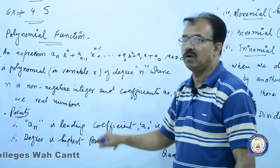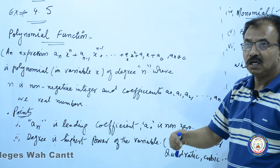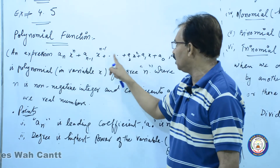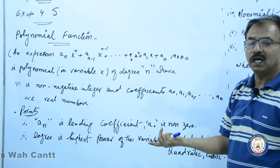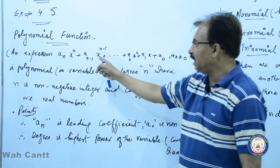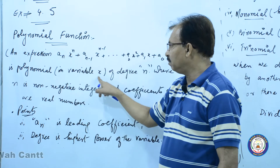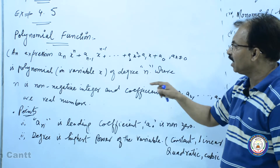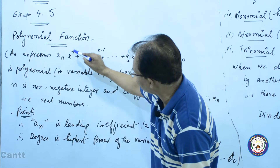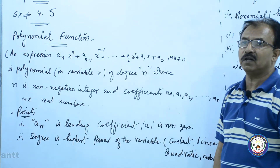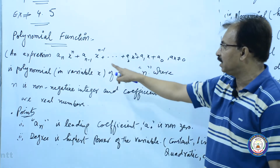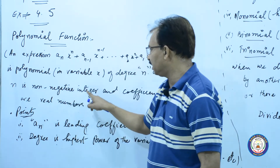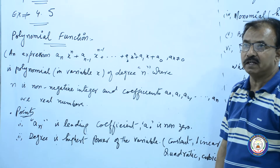اس polynomial میں variable x ہے۔ یہی polynomial y کے لحاظ سے بھی ہو سکتی ہے، یا z کی بھی ہو سکتی ہے، تو variable y یا z کہلائے گا۔ degree کیا ہوگی: جو variable کی highest power ہوگی وہ اس کی degree کہلائے گی۔ یہاں highest power n ہے، اس کے بعد where n is non-negative integer۔ n کیا ہوگا: non-negative integer ہوگا۔